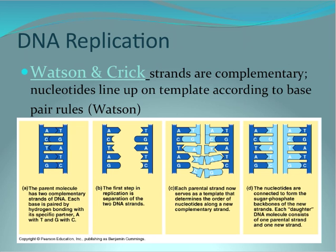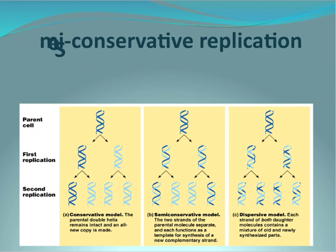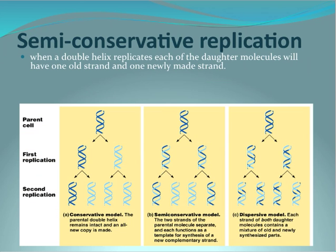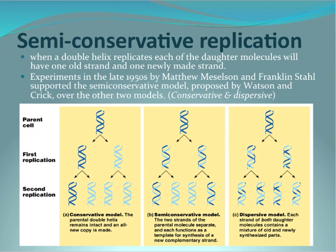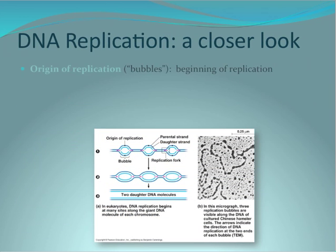The first step in replication is the separation of the two DNA strands. Each parental strand now serves as a template that determines the order of the nucleotides along a new complementary strand. Next, the nucleotides are connected to form the sugar-phosphate backbones of the new strands. Each daughter DNA molecule consists of one parental strand and one new strand. DNA replication proceeds through a semi-conservative manner in which the two strands of the parent molecule separate, and each functions as a template for the synthesis of a new complementary strand, shown in model B.